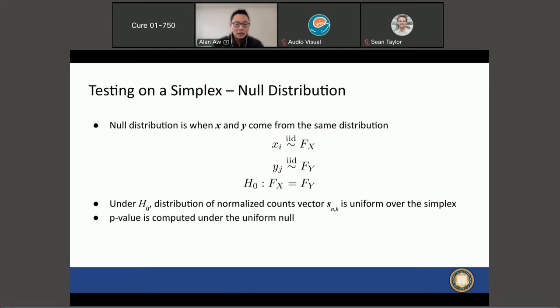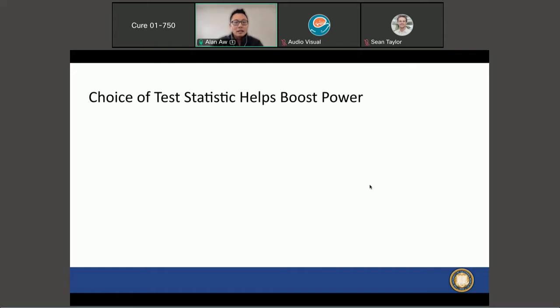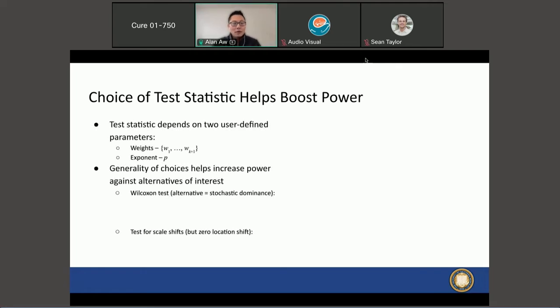The key insight, however, is that the choice of the test statistic will actually help to boost the power of the test against alternatives of interest to the user. Remember that the test statistic depends on two user-defined parameters, the weights and the exponent p, and the generality of these choices helps increase the power against alternatives that the user has in mind.